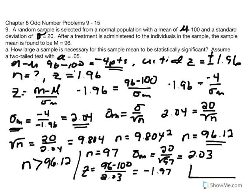Drawing this out: we were looking for a z score that pushed us into the critical region, and we conclude that this value does fall in the critical region, enabling us to reject the null hypothesis. This last part is not necessary but is recommended so you can check your answers and affirm the relationship between n and the standard error of the mean.